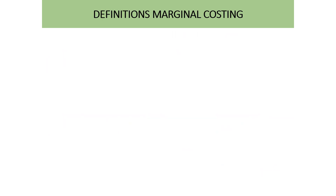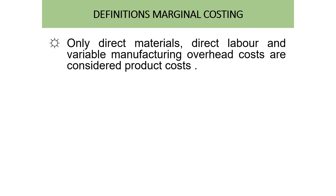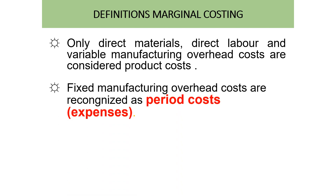For marginal costing, only direct material, direct labor, and variable manufacturing overhead are considered product costs. Fixed manufacturing overhead costs are recognized as period costs or expenses, and are not included as part of the product cost under marginal costing.